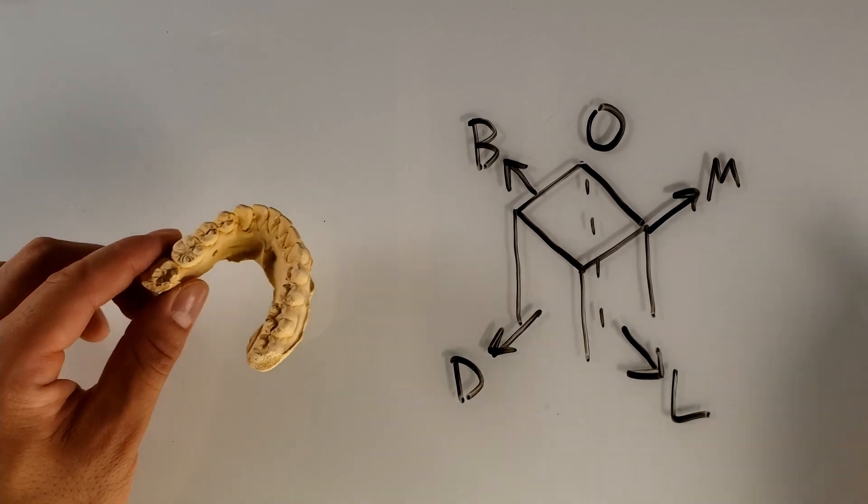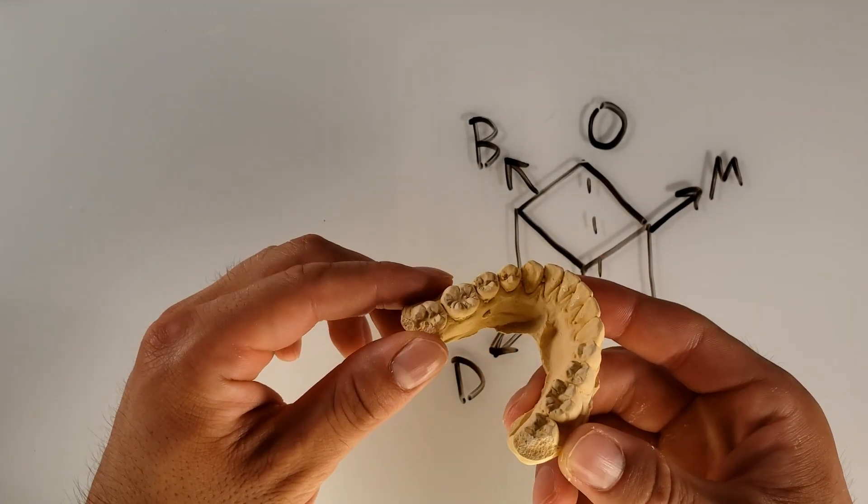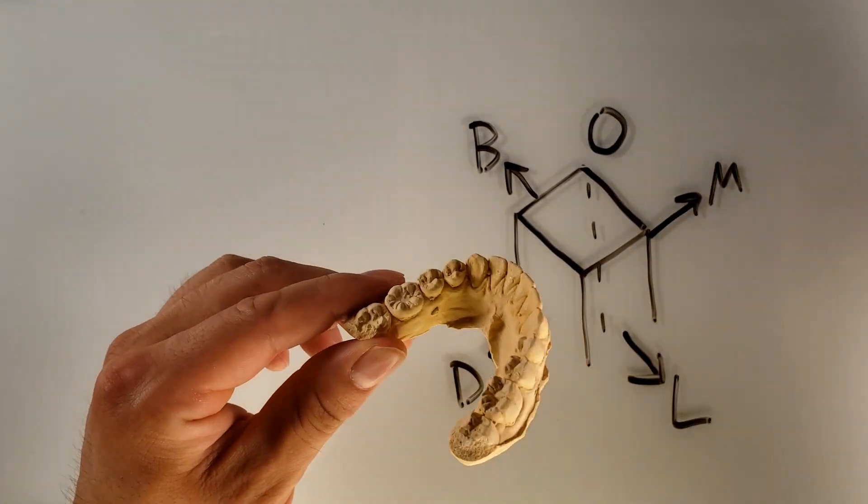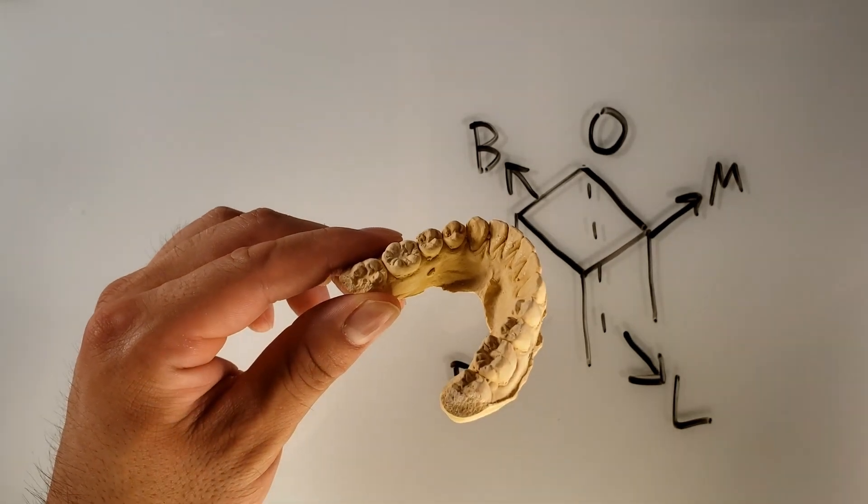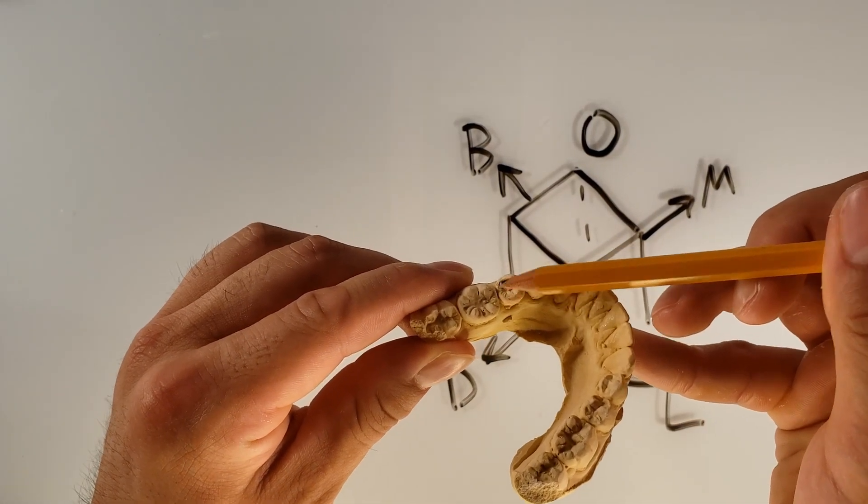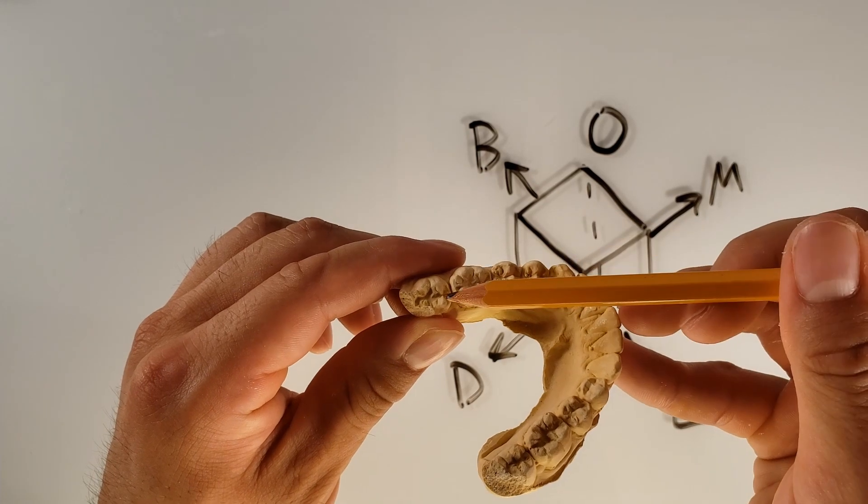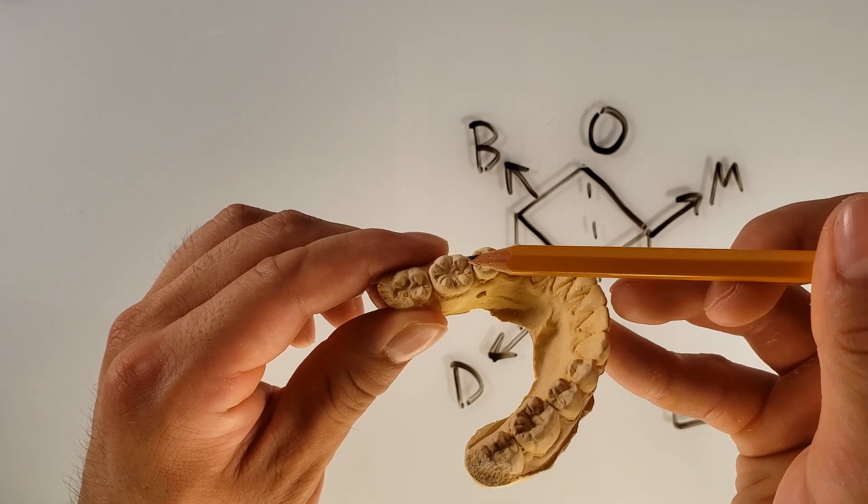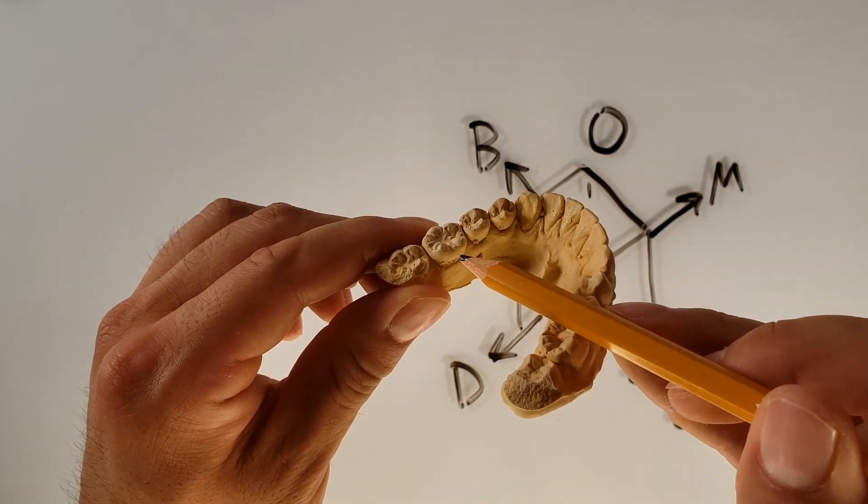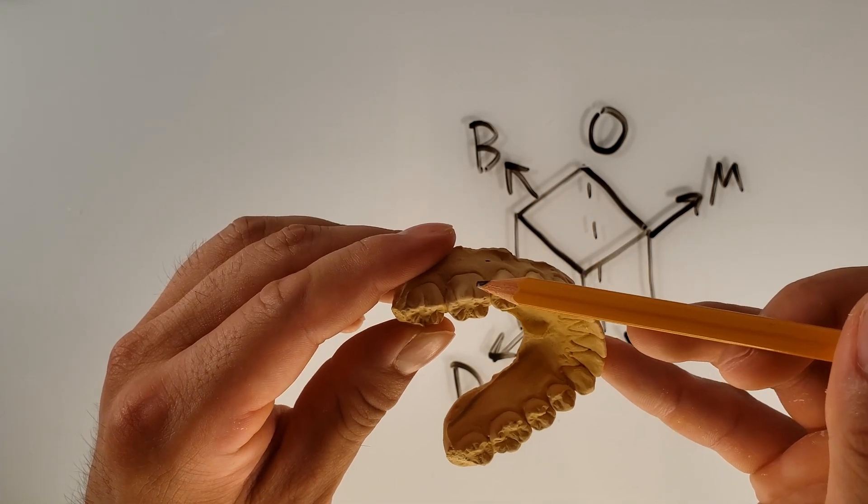All right, so now to run back through. We have the occlusal top portion. We have the mesial towards the midline portion, the distal away from the midline portion, the lingual portion, and then the buccal portion.